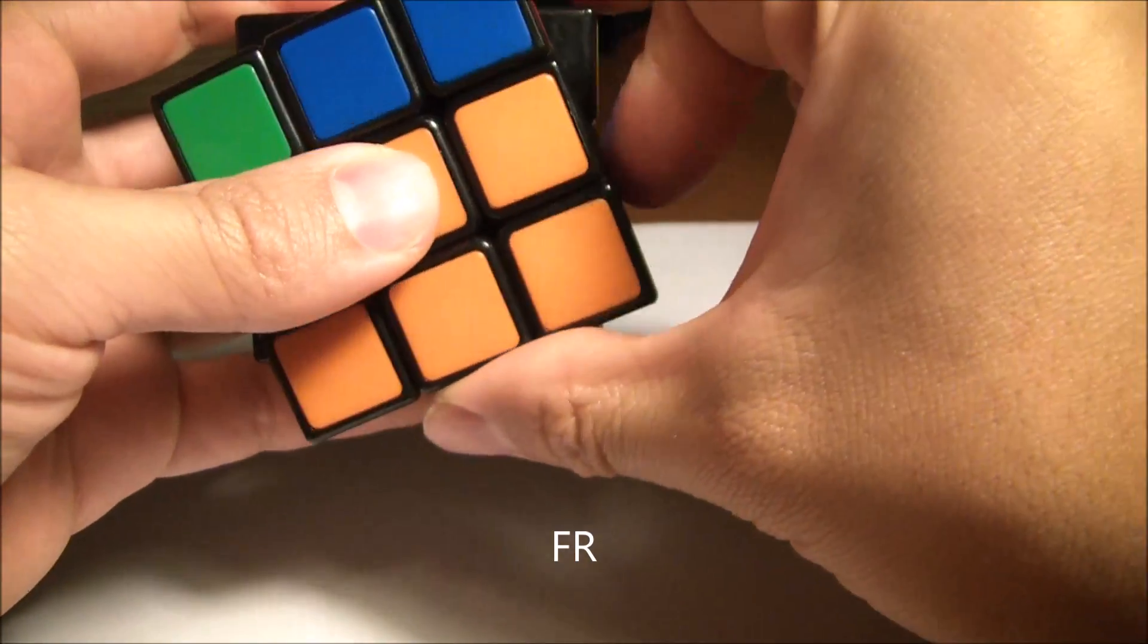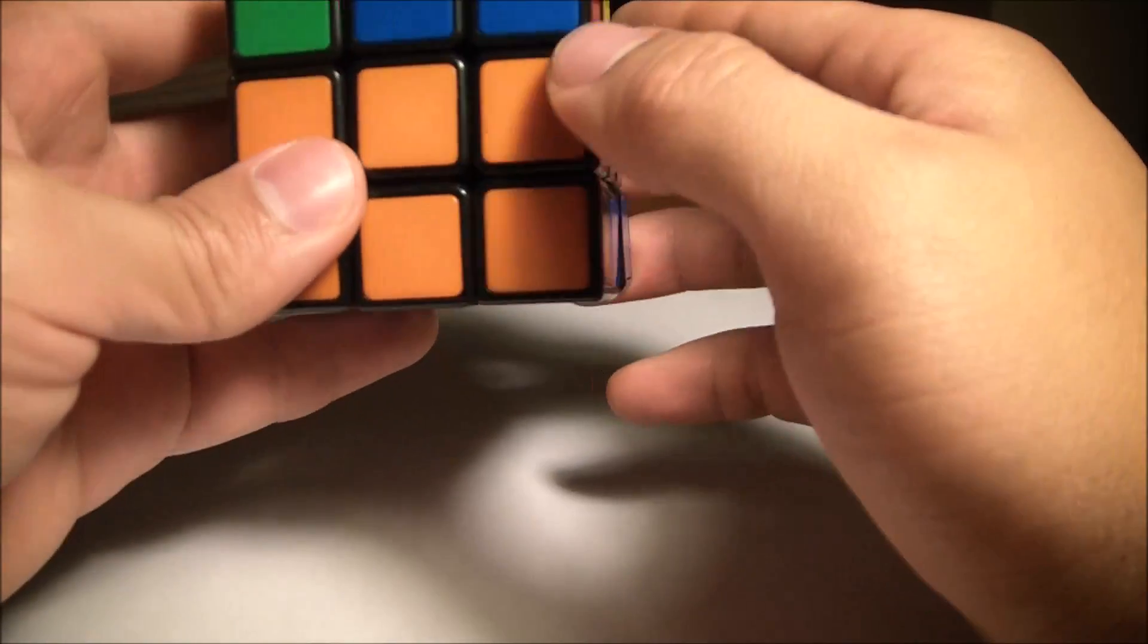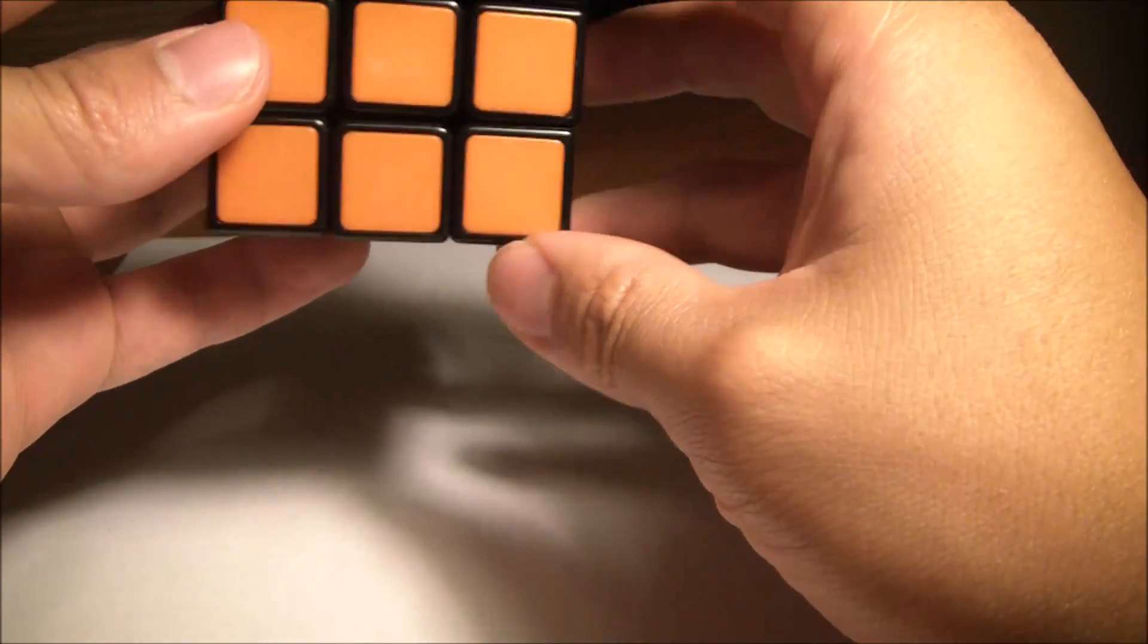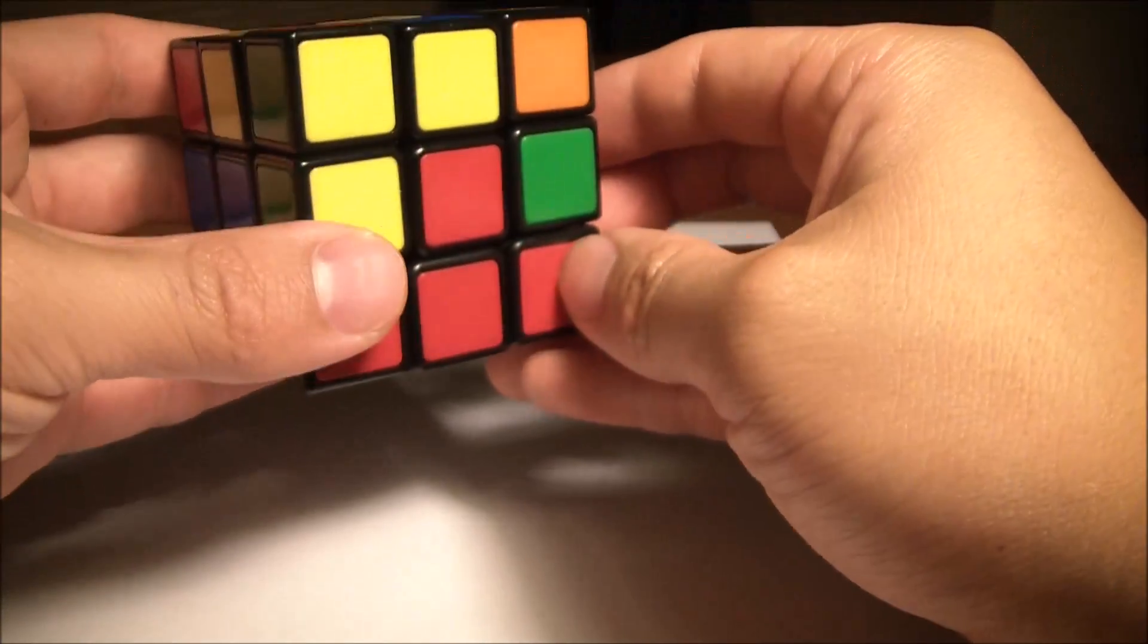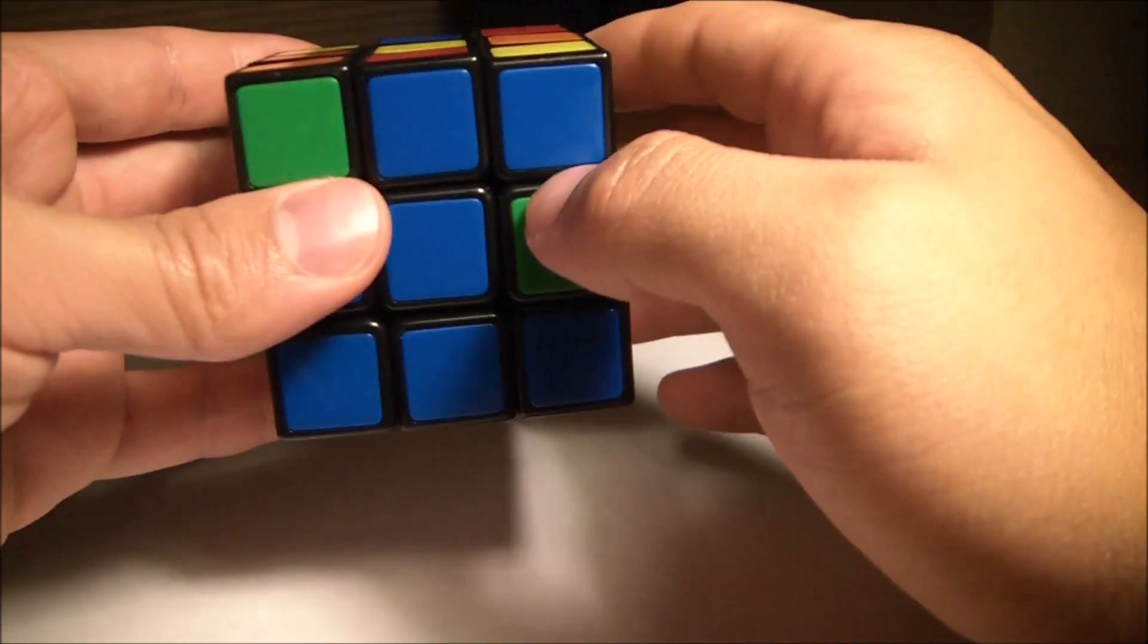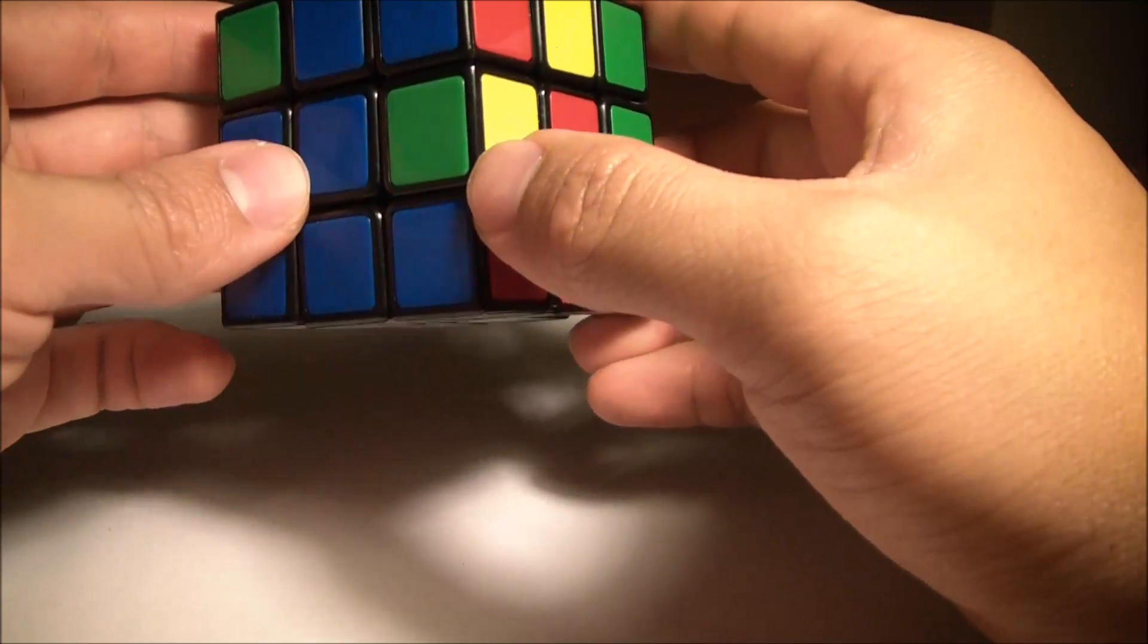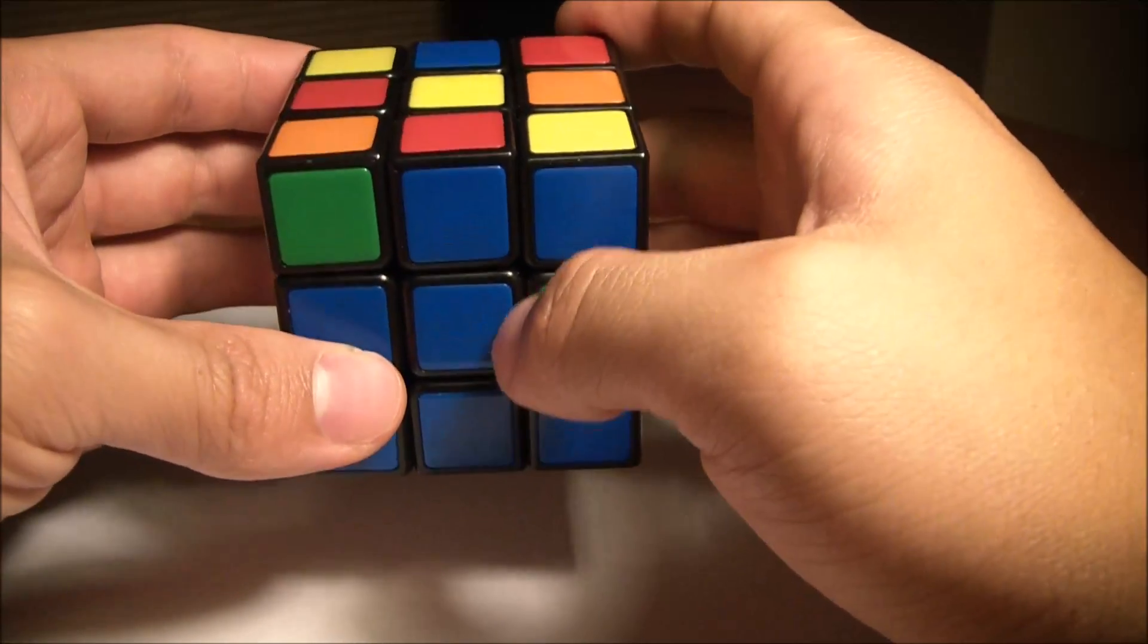If you follow those steps, that piece that was originally right here is now right here. The algorithm is important to remember because it keeps what you have solved before in the same spot. If you can somehow find out the pattern without having to memorize the algorithms, good for you. That means you really understand how keeping the placement of the cubes is very important.